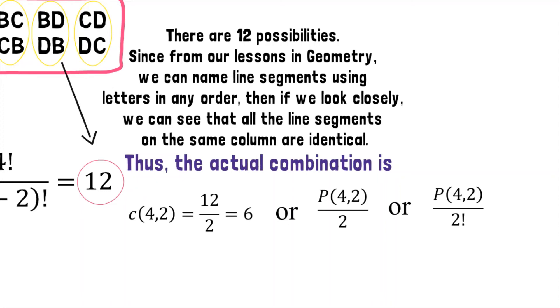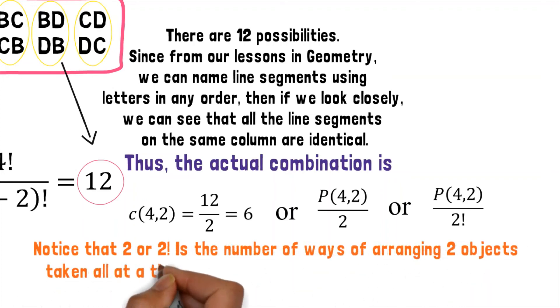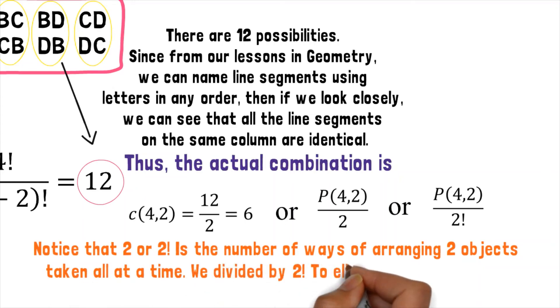Notice that 2 factorial is the number of ways of arranging 2 objects taken all at a time. We divided it by 2 factorial to eliminate the duplicates.